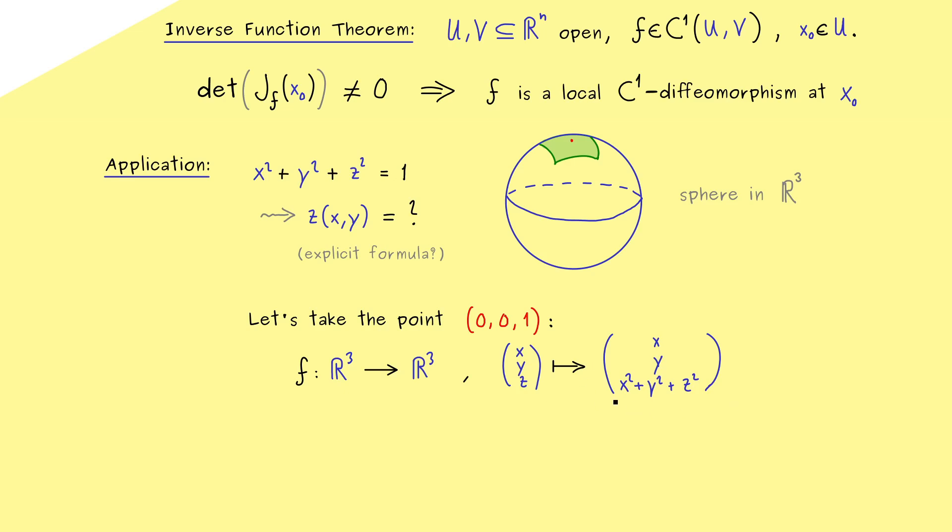Therefore in the end we are only interested in the case that the last component of the image of f is equal to 1. So we are interested in the pre-image of that, which means the sphere here lives on the left hand side.